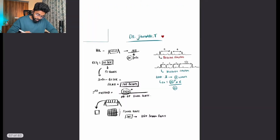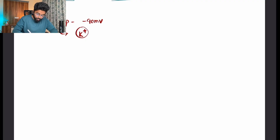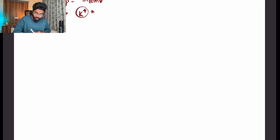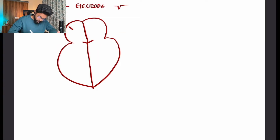Next we move to the conduction system of the heart. The resting membrane potential of a cardiac myocyte is minus 90 mV, which is dependent on potassium. When a conduction wave moves towards the electrode, we get a positive wave; when it moves away, we get a negative wave. The pathway is: SA node, AV node, AV bundle, Bundle of His, right and left bundle branches, and Purkinje fibers.